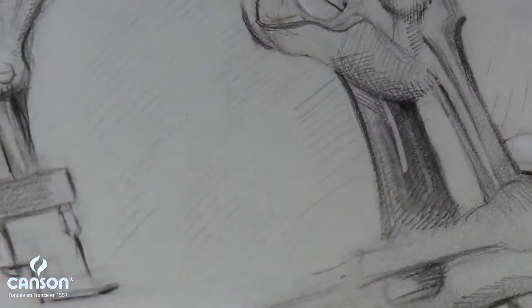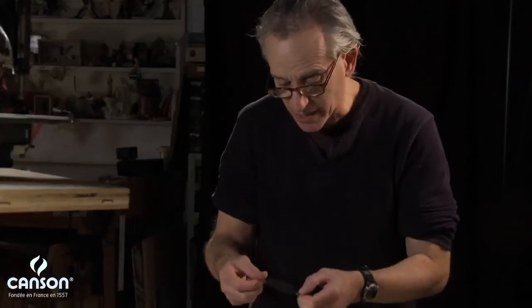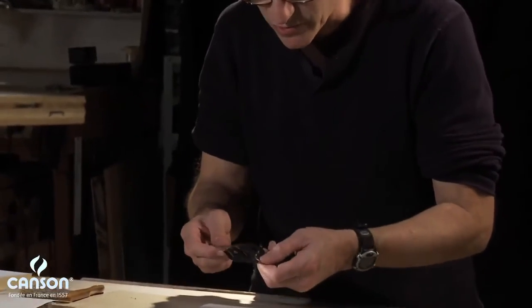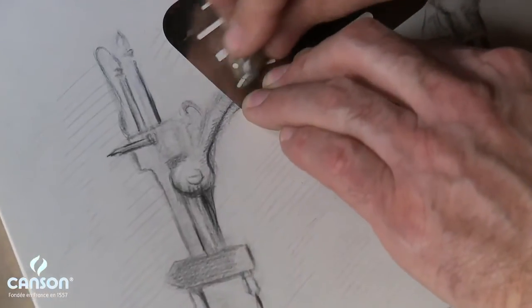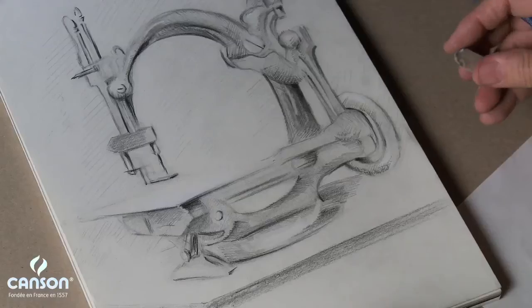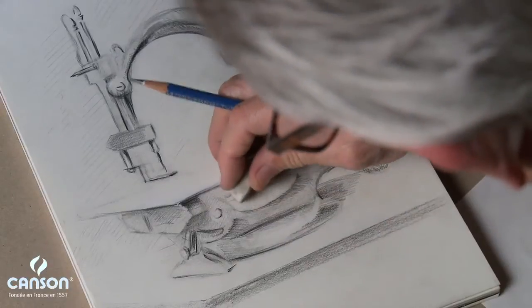I've got a little erasing shield, just a little metal template. I'll put in a few of these. Pull out a sharp highlight.